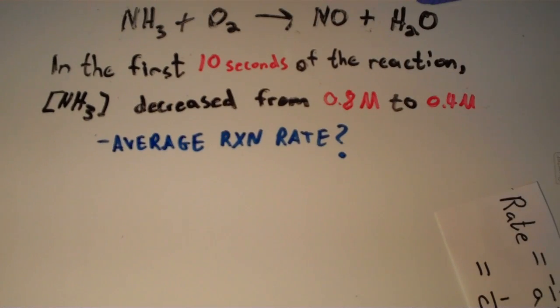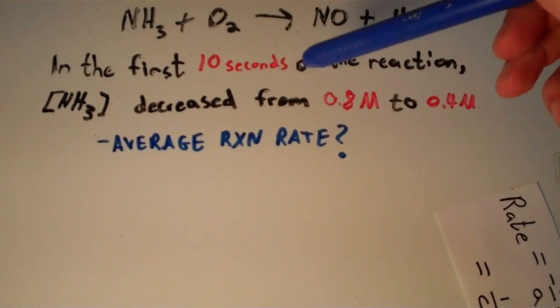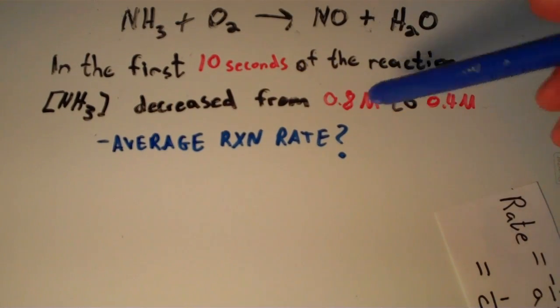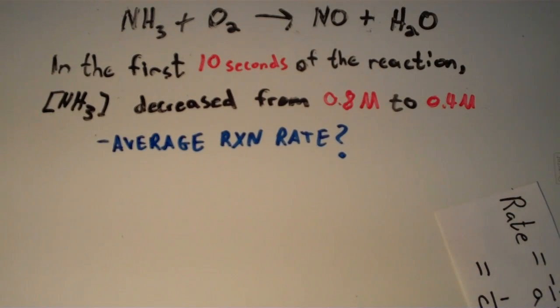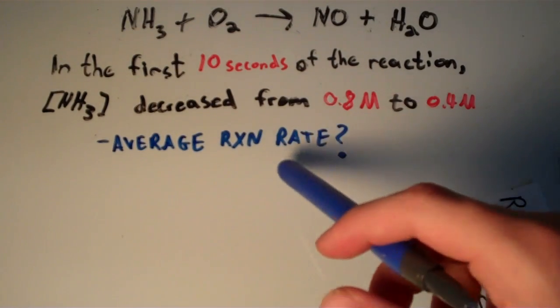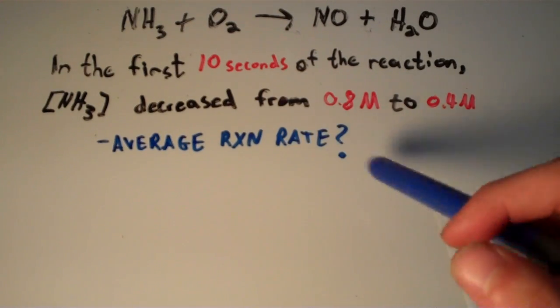And it says that in the first 10 seconds of the reaction, the concentration of NH3 decreased from 0.8 molar to 0.4 molar. And the question is asking, what is the average reaction rate in this time interval?